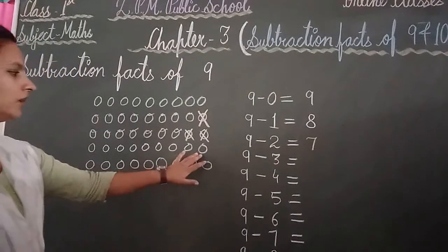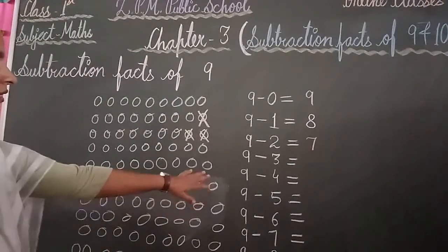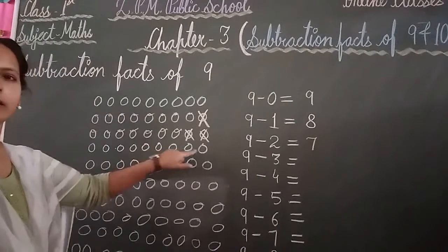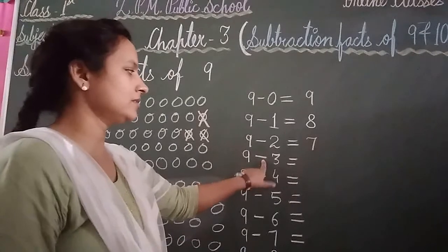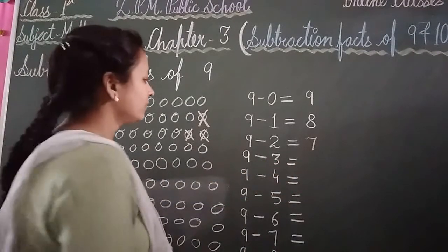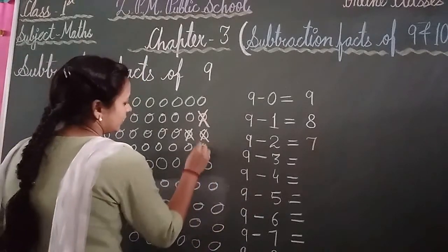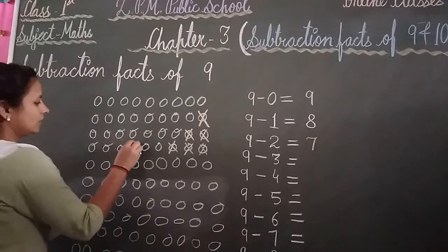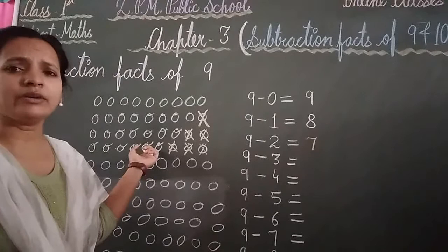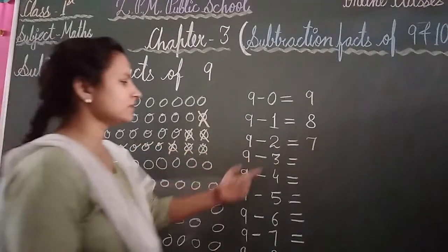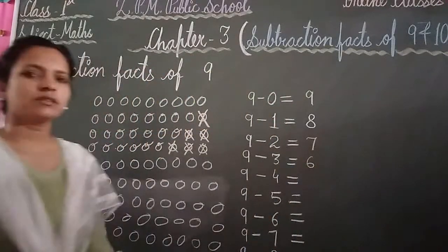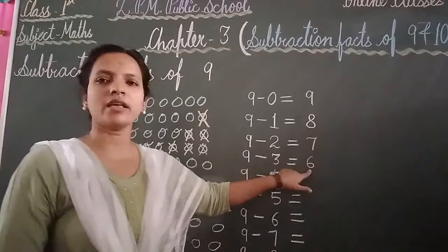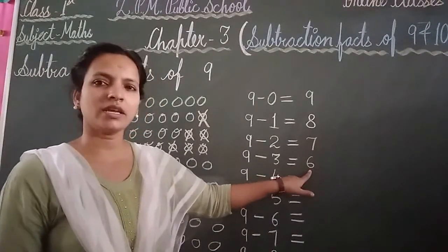Again draw your 9 balls. Write your number: 9 minus 3 equal to. Cut and cross out 3 balls: 1, 2, 3. Count the balls left: 1, 2, 3, 4, 5, 6. How many balls are left? 6. How many did you cross out? 3. The answer is 6.